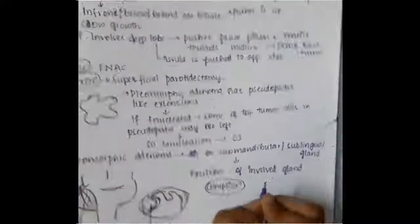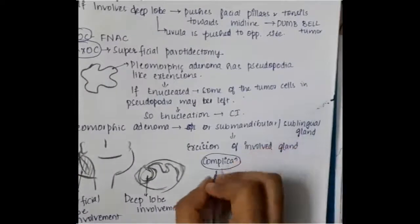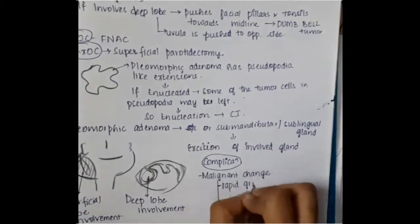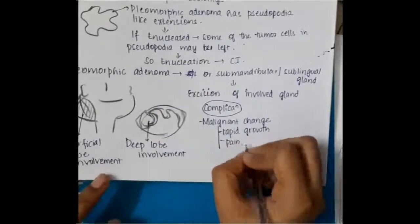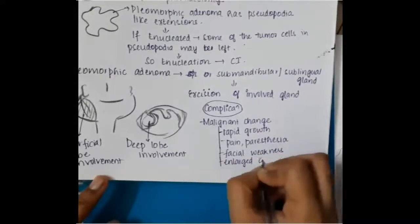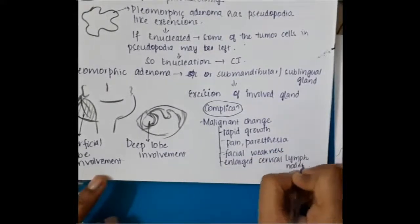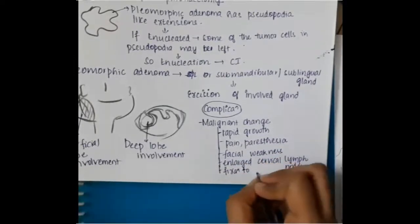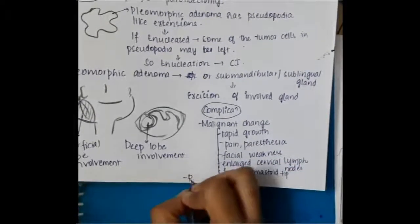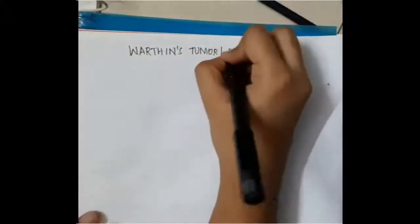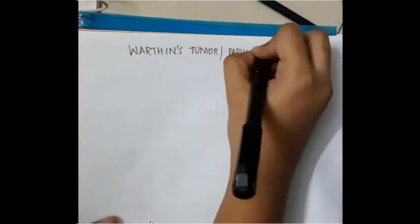Complications if you see, in complications first, there is malignant change. In the malignant change, you have rapid growth. There can be rapid growth or pain, paresthesia, if there is facial weakness or enlarged cervical lymph nodes or if there is fixation of mastoid tip. In all these cases, you will always think of malignant change. Recurrence is also a complication. Then, this is about the pleomorphic adenoma, parotid fistula and Frey's syndrome.